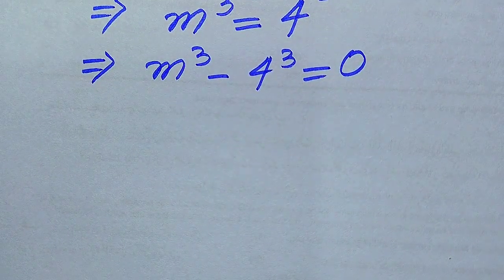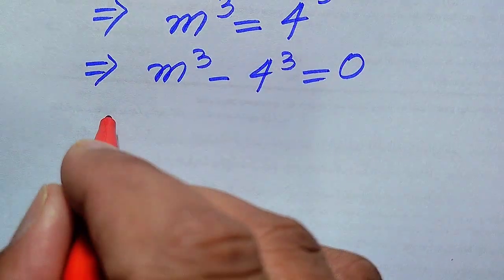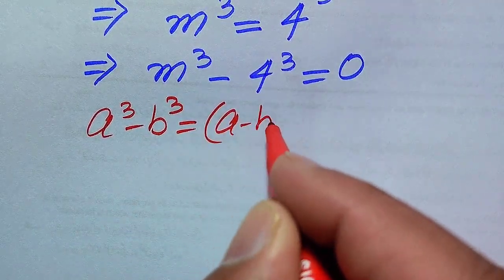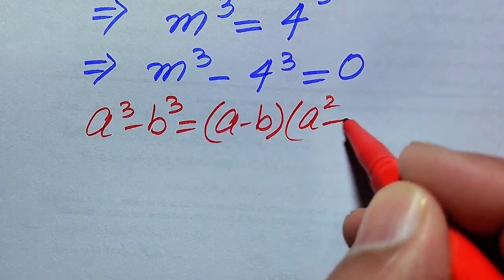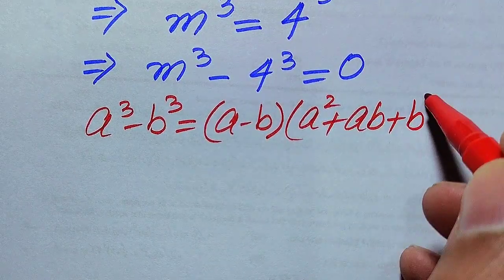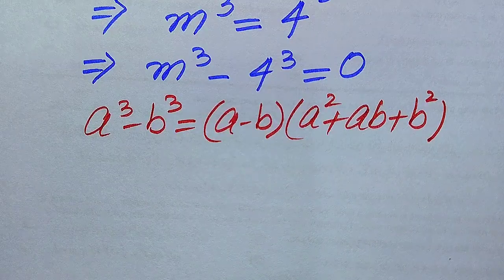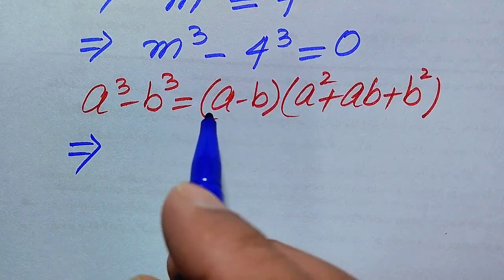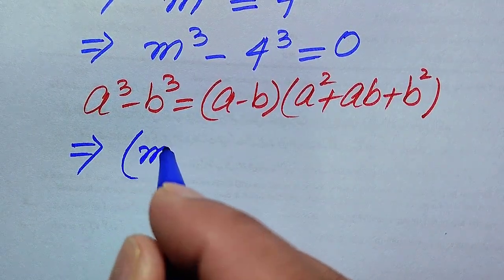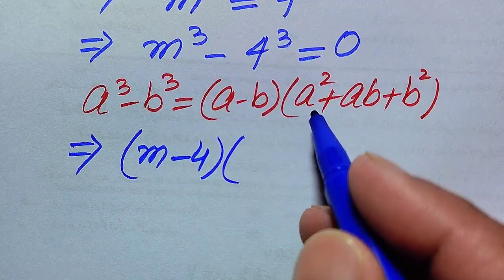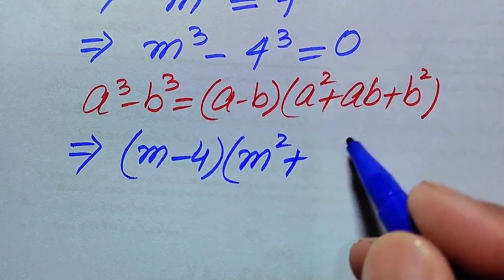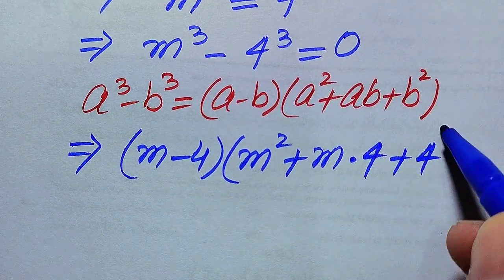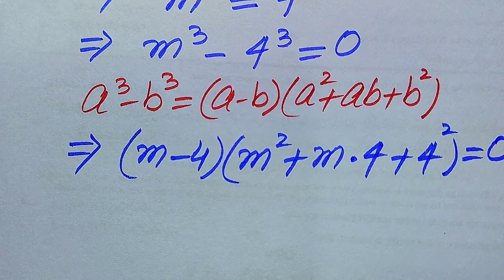In the next step we apply the difference of cubes formula: a cubed minus b cubed equals (a minus b) times (a squared plus ab plus b squared). According to this formula, m cubed minus 4 cubed becomes (m minus 4) times (m squared plus m times 4 plus 4 squared), and this whole equation equals 0.